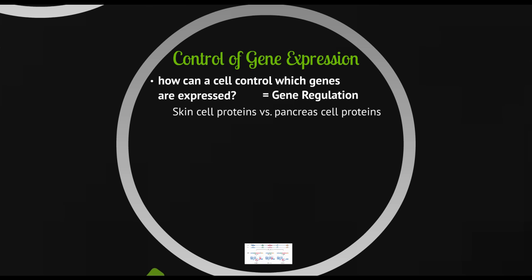Why does a skin cell make melanin and a pancreas cell make insulin, and not vice versa? That's going to be through control of gene expression. Gene regulation can either increase or decrease expression — it might turn genes on so a gene is expressed more, or it can decrease or even stop gene expression entirely. So control can be positive or negative.